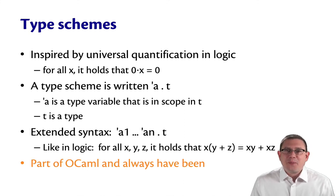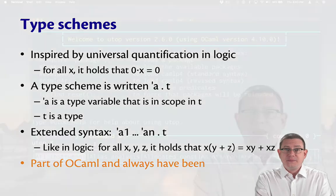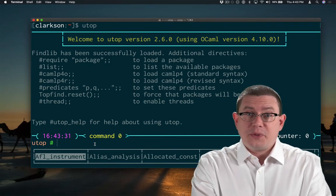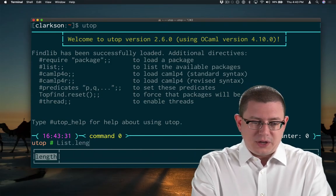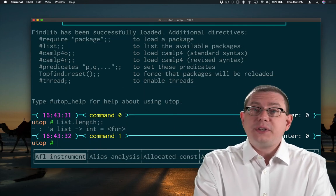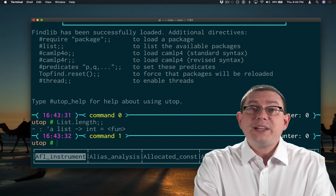Guess what? Type schemes are part of OCaml and always have been. You just haven't seen them until now. How about the length function from the list module? List dot length has type alpha list arrow int. You knew that, right?